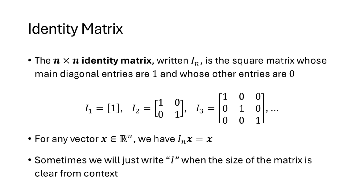The n by n identity matrix, written capital I subscript n, is the square matrix whose main diagonal entries are 1 and whose other entries are 0. So I₁ is just the 1×1 matrix containing a 1, I₂ is the 2×2 matrix with 1 0 / 0 1, I₃ is the 3×3 identity matrix, and so on. This matrix has the property that if you multiply it by any vector, you get that vector back: Iₙ times x equals x. We usually just write I if the size is clear from context.